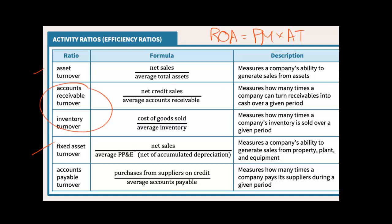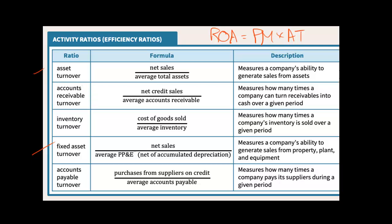The other three activity ratios all have to do with working capital accounts specifically: accounts receivable, inventory, and accounts payable. Accounts receivable turnover tells us how many times a year the company is collecting its average receivable balance. Inventory turnover tells us how many times a year they're selling through inventory. And payable turnover tells us how many times a year they're turning over the payables.